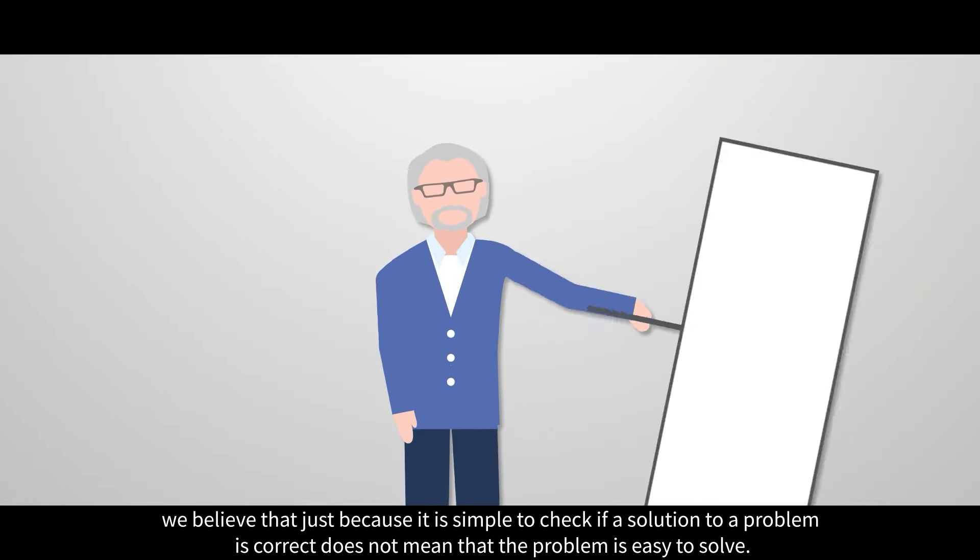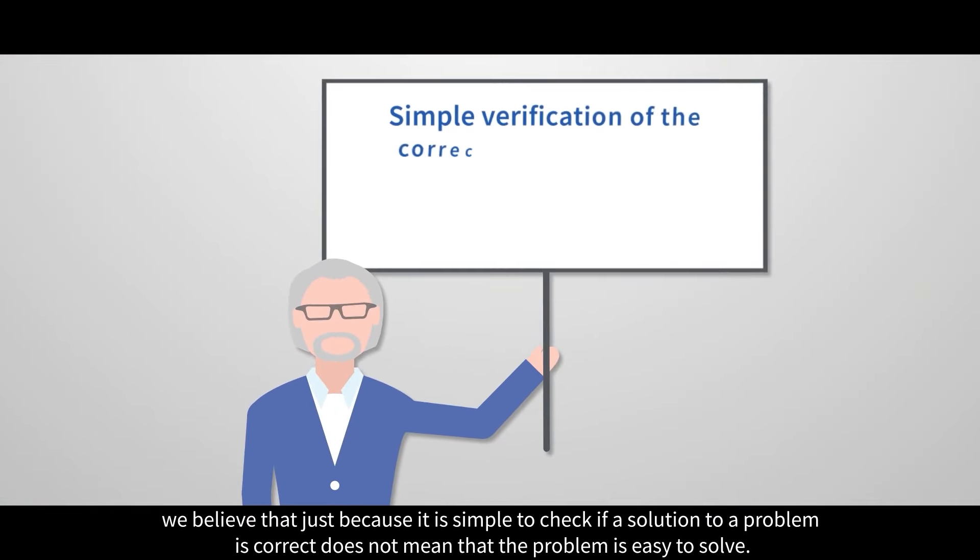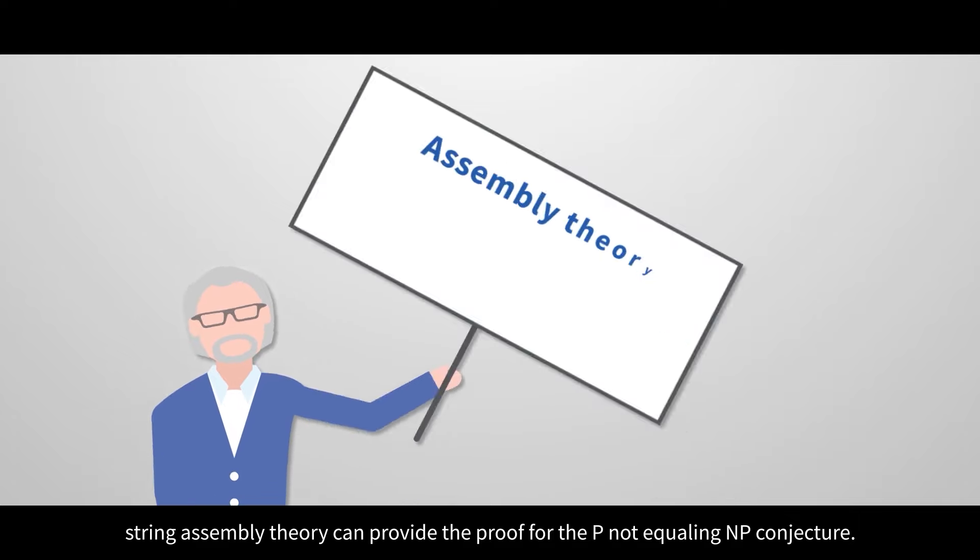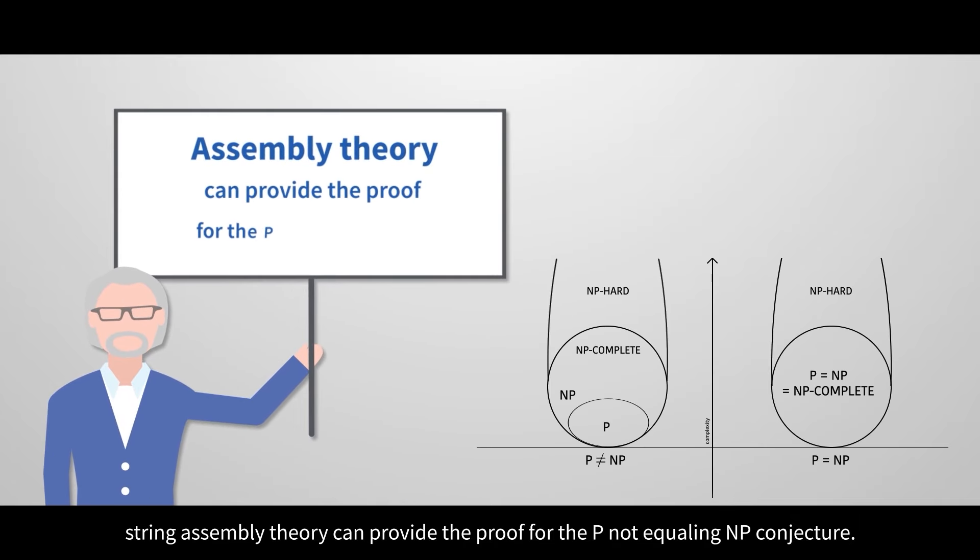Furthermore, we believe that just because it is simple to check if a solution to a problem is correct, does not mean that the problem is easy to solve. Therefore, string assembly theory can provide the proof for the P not equaling NP conjecture.